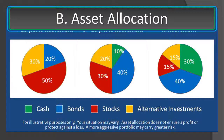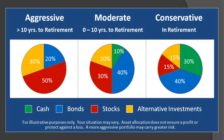Subsection B: Asset Allocation. Asset allocation is oftentimes portrayed as a pie chart of broad investment categories attuned to risk. What you see, then, is that by modifying the amount of exposure you have to more risky asset classes, such as stocks and alternative investments, versus less risky asset classes, such as cash and bonds, you can adjust the risk of your investments as a whole. This is the underlying premise of asset allocation.